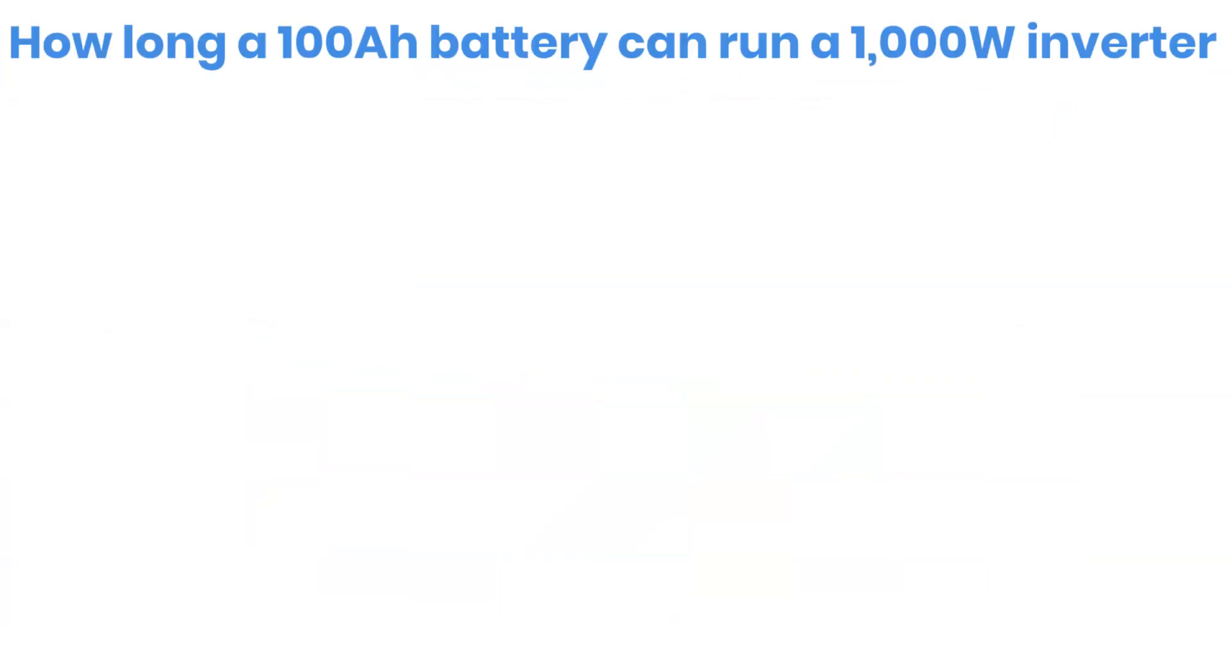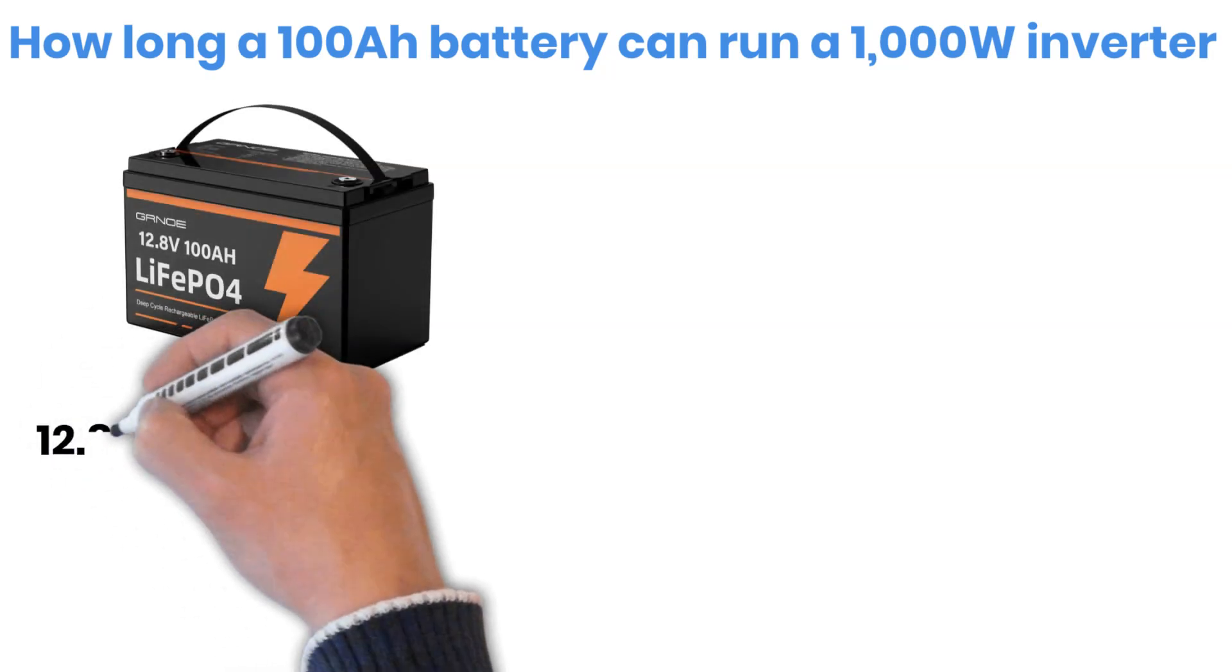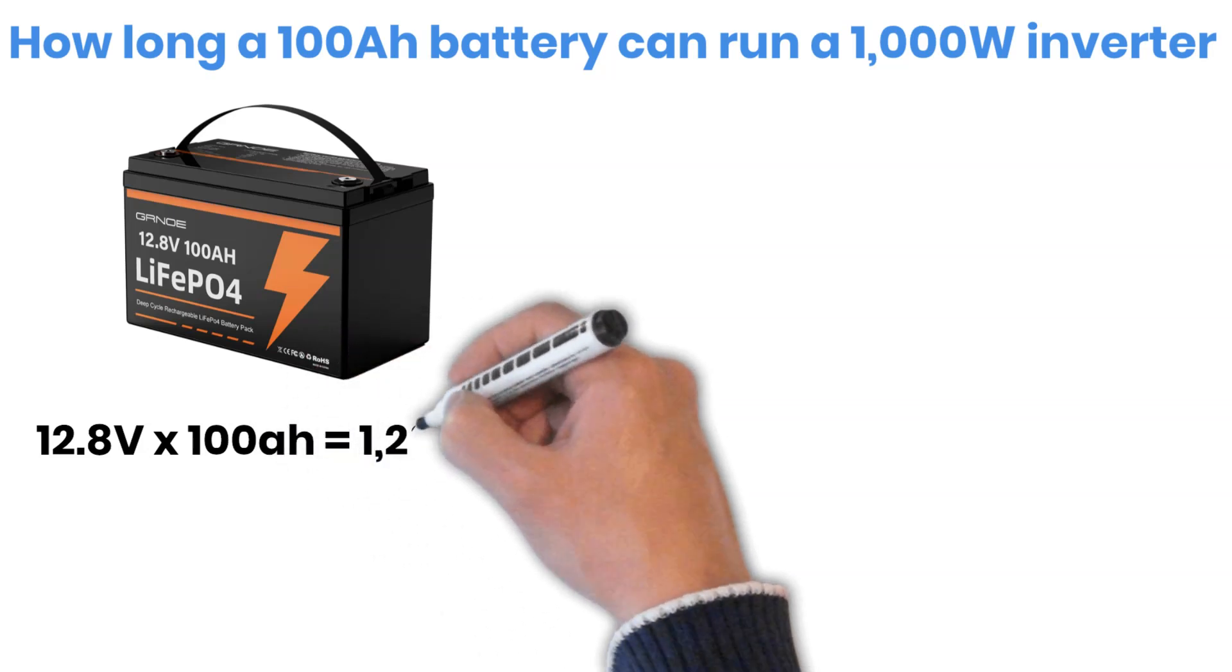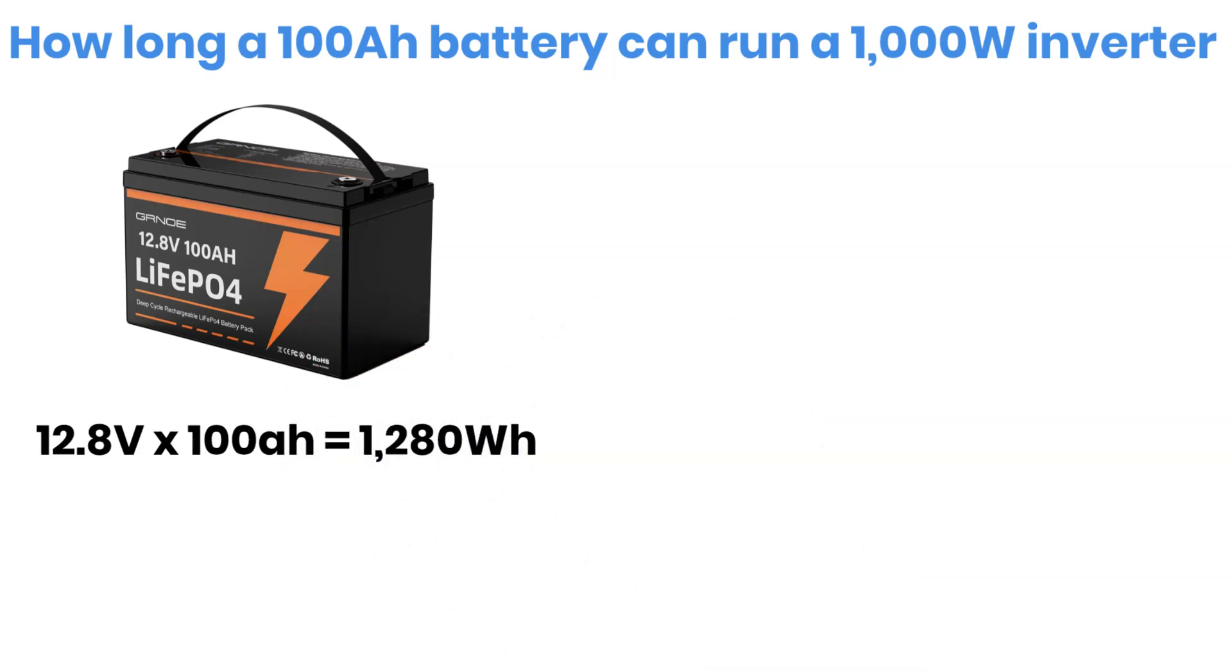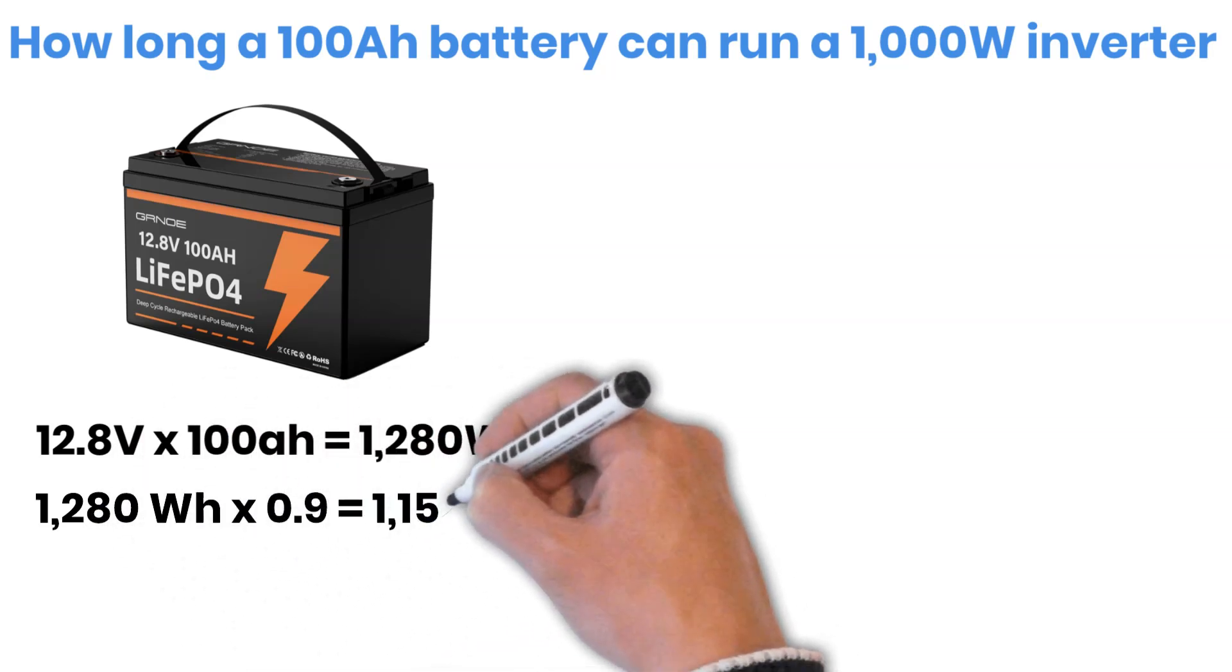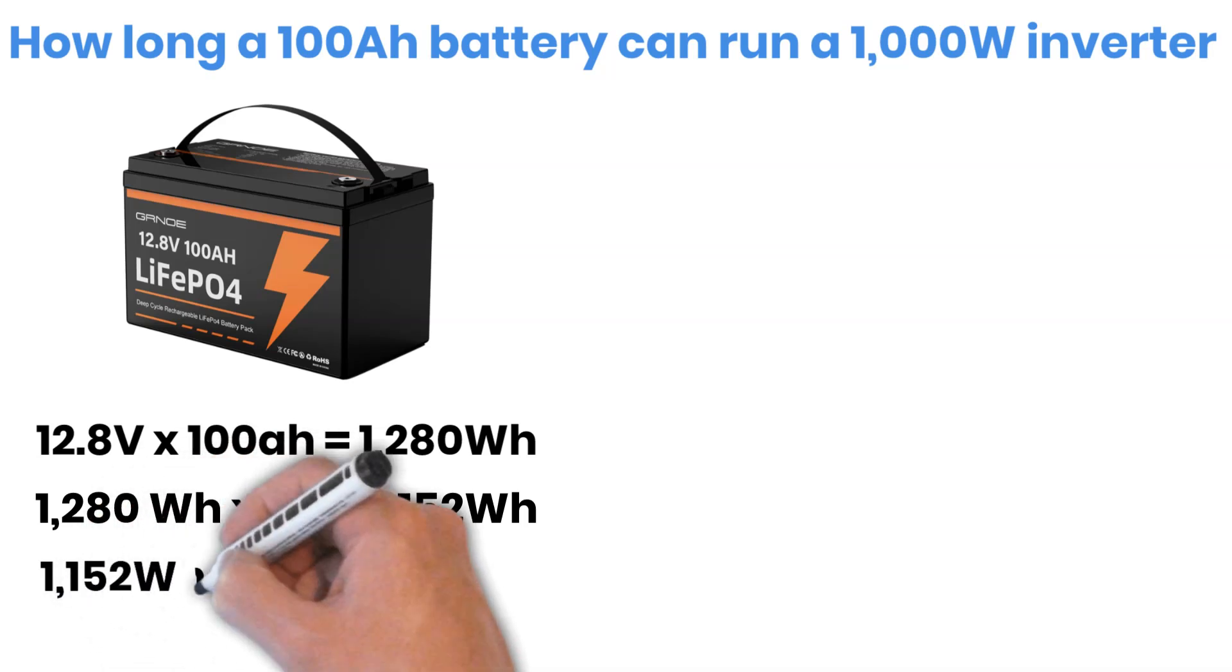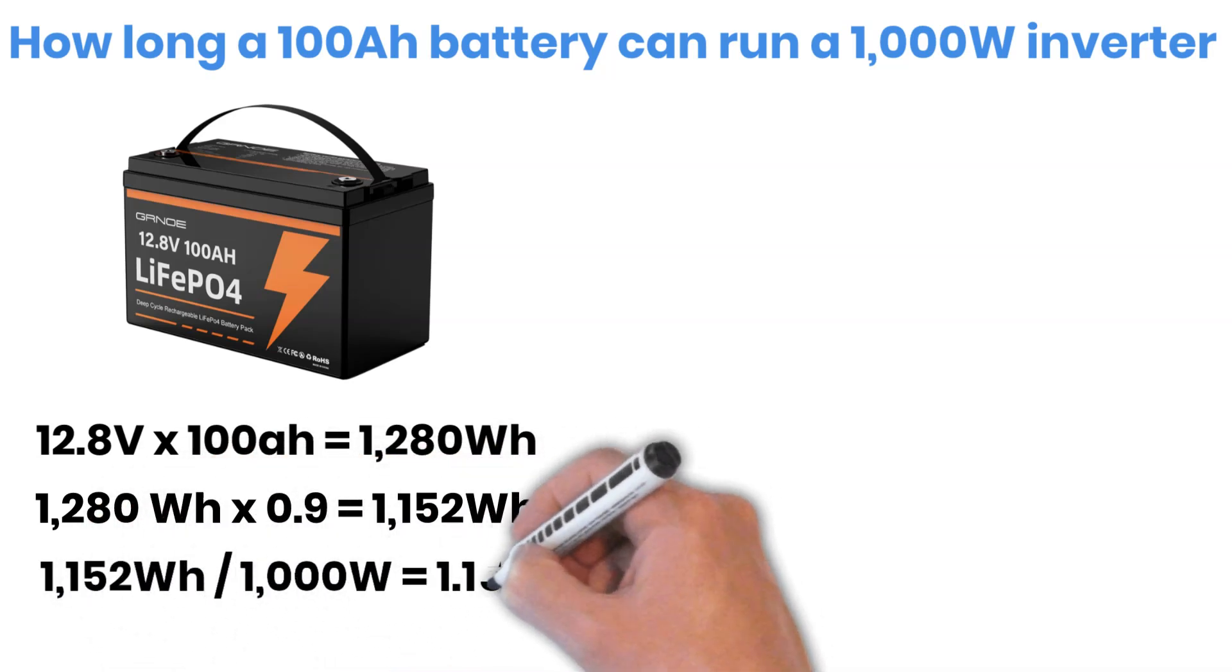Now, let's see how long a 100 amp hour battery can run a 1,000 watt inverter at full load. A 12 volt, 100 amp hour lithium battery stores about 1,280 watt hours of energy. After efficiency losses, that leaves around 1,152 watt hours usable. If you're running a 1,000 watt load, you'll get roughly 1.15 hours of run time. That's about 1 hour and 9 minutes.